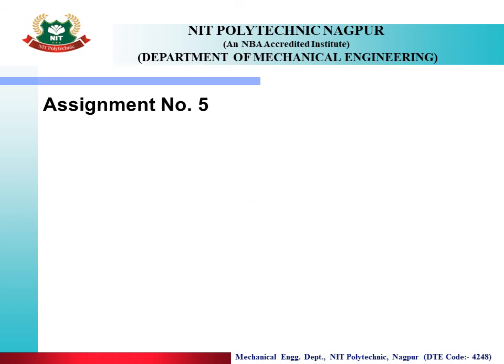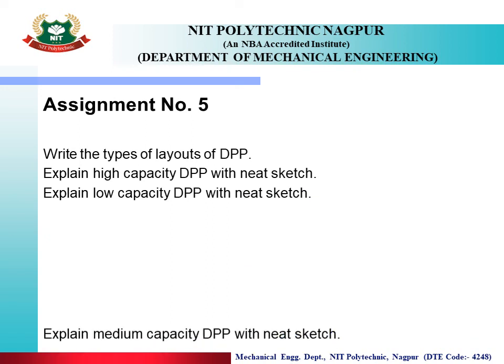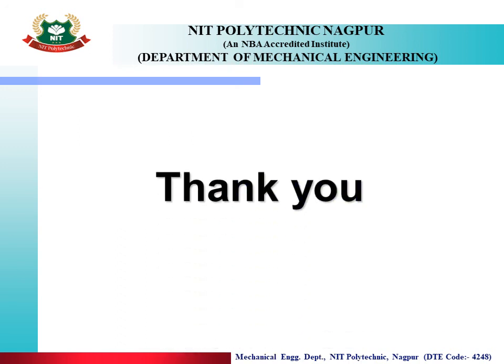Now it is time for an assignment. Assignment 5: Write all the questions and try to solve them in your copy. Question 1: Write the types of layouts of a diesel power plant. Question 2: Explain the high capacity diesel power plant with a neat sketch. Question 3: Explain the low capacity diesel power plant with a neat sketch. Question 4: Explain the medium capacity diesel power plant with a neat sketch. For more understanding, watch this video again. If you face any difficulty, pause the video and watch it repeatedly. If you are still unable to solve, contact the subject teacher. Thank you, happy learning.